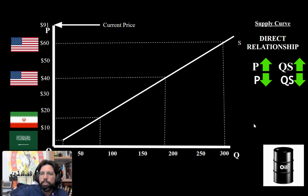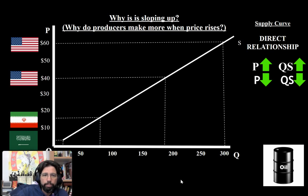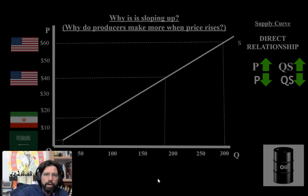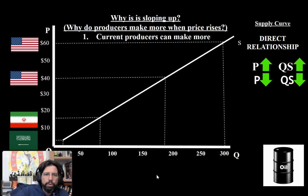So when price goes up, quantity supplied goes up. Now why does it slope upwards? Well, when you're asking why does the supply curve slope upwards, you're basically asking why do producers make more when the price rises? And it's really not that hard. Number one, current producers can actually make more as the price rises.